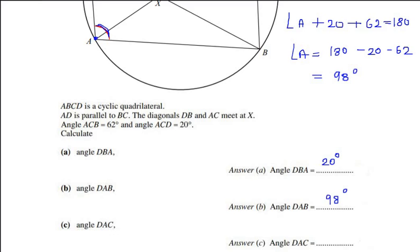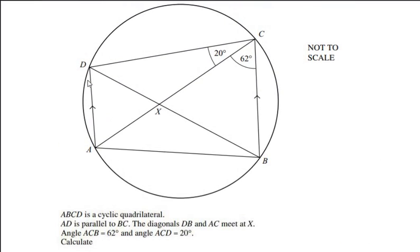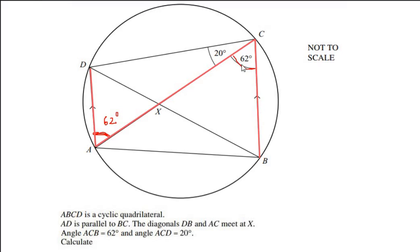Now let us look at part c: find angle DAC. Since line AD is parallel to line BC, line AC acts as a transversal cutting the two parallel lines at point A and point C. Using the properties of parallel lines, angle DAC equals angle ACB, which is 62 degrees, because of alternate angles — also called Z angles.